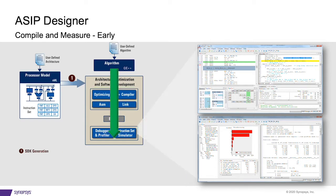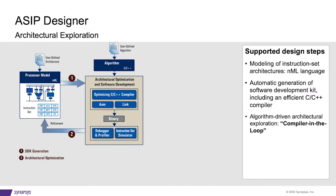Thanks to the immediate availability of the compiler, it is possible to use the real application code to profile the performance of the selected architecture and to identify the remaining bottlenecks, which then allows you to go back to the NML model for an enhancement. We refer to this as the compiler-in-the-loop methodology, emphasizing the importance of immediate availability of the compiler.